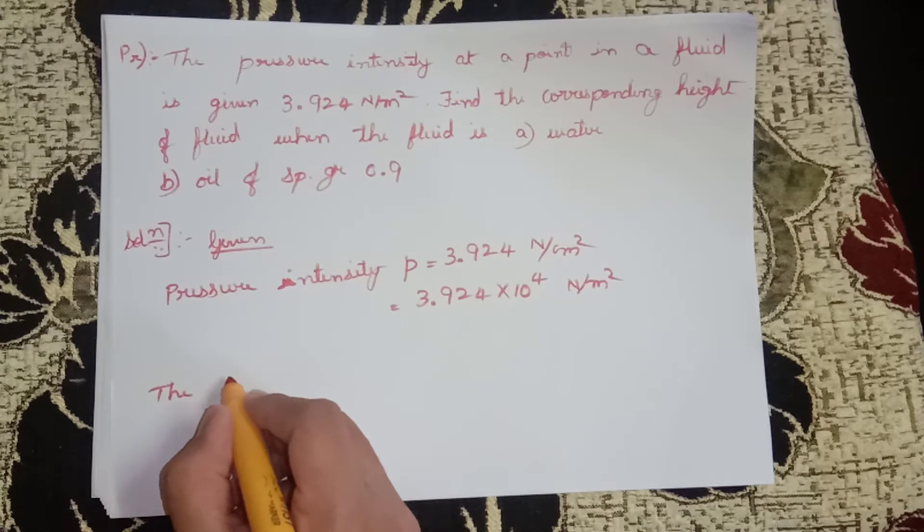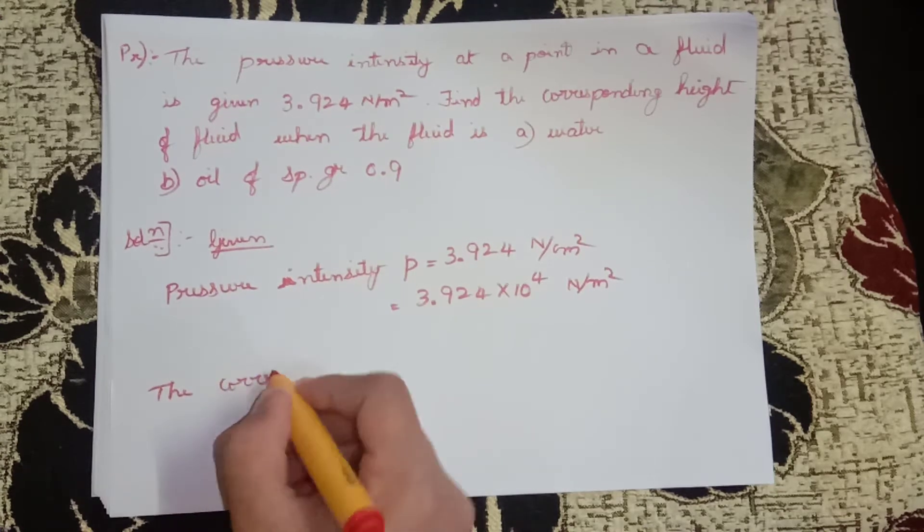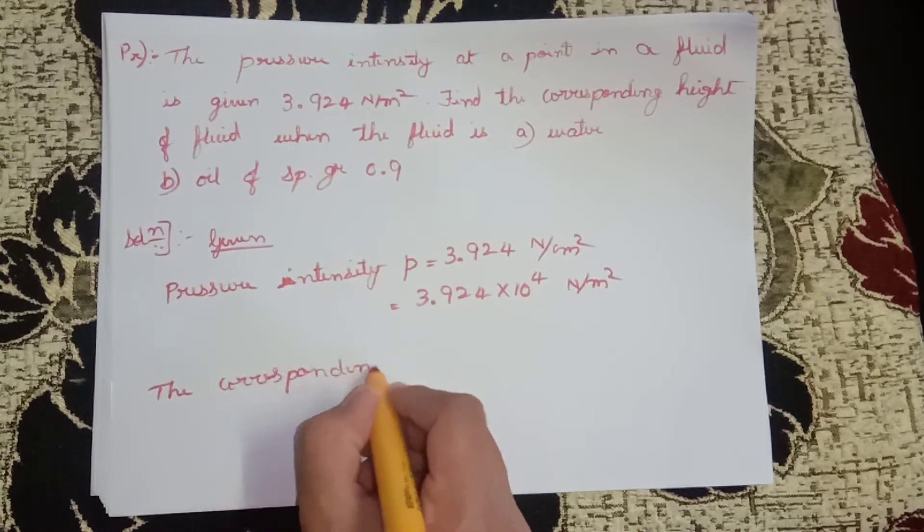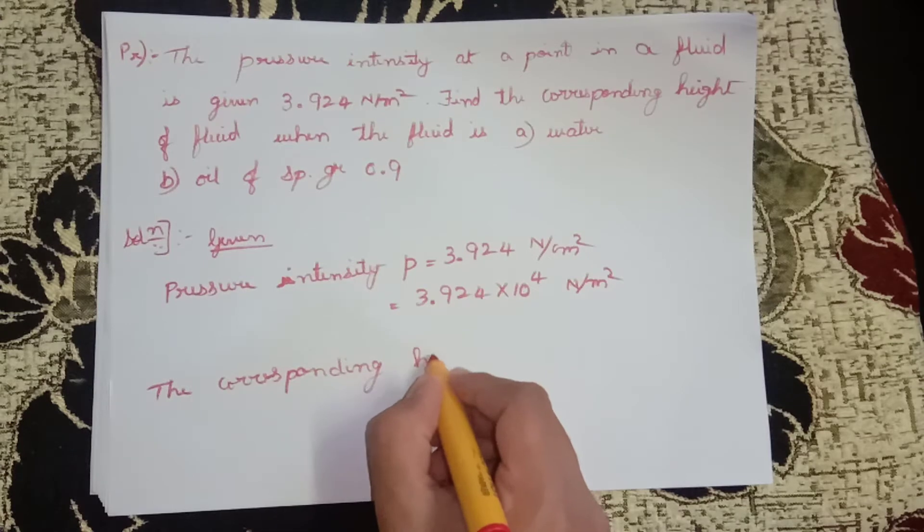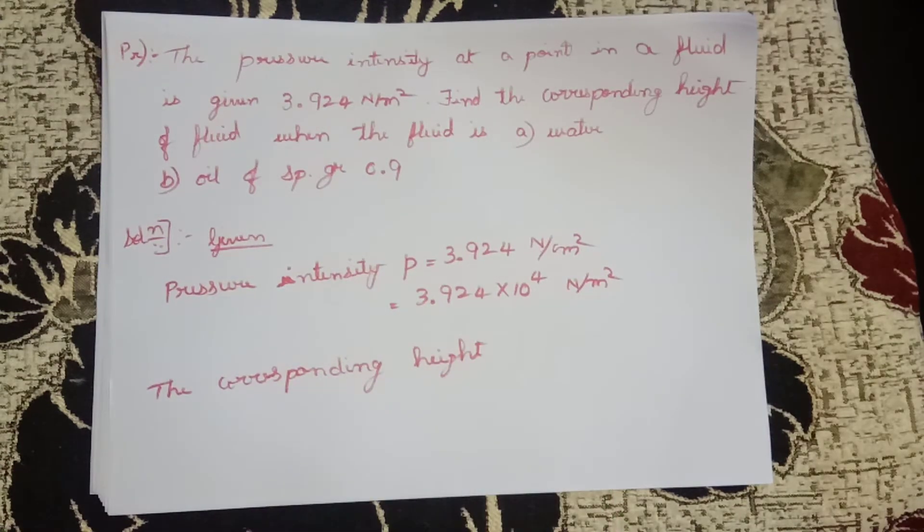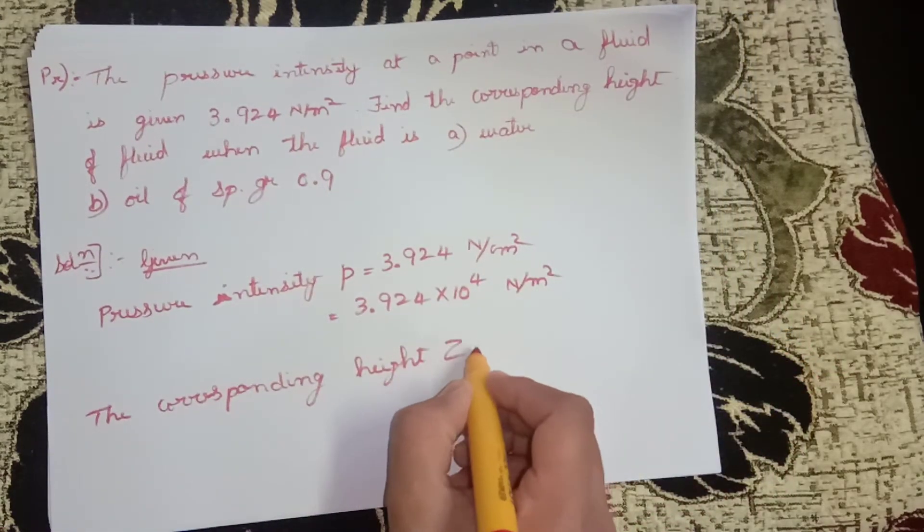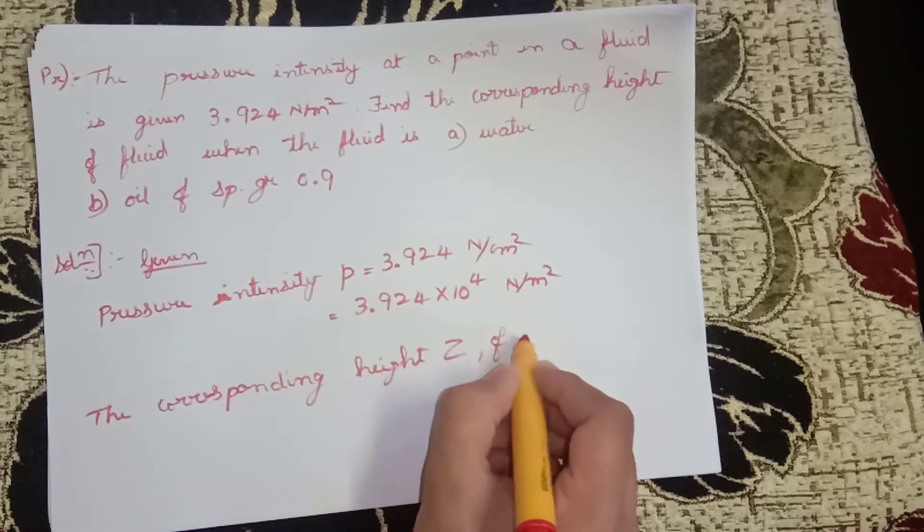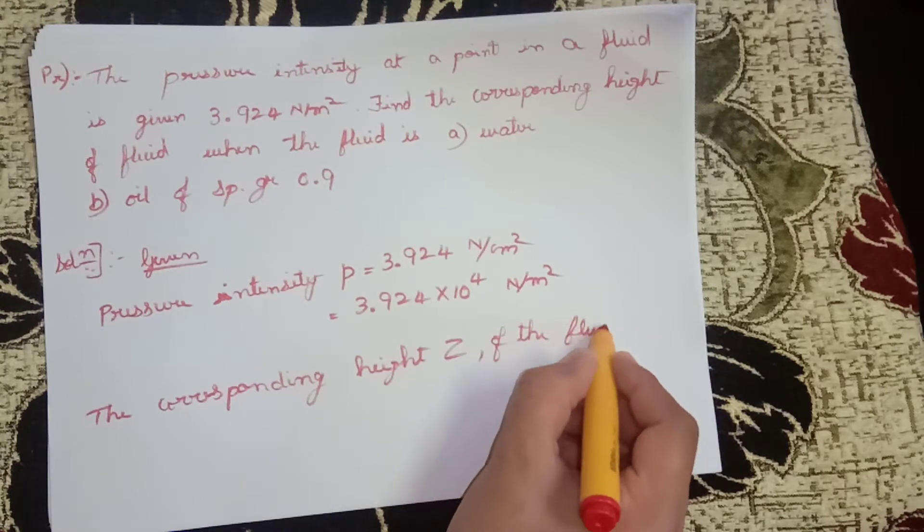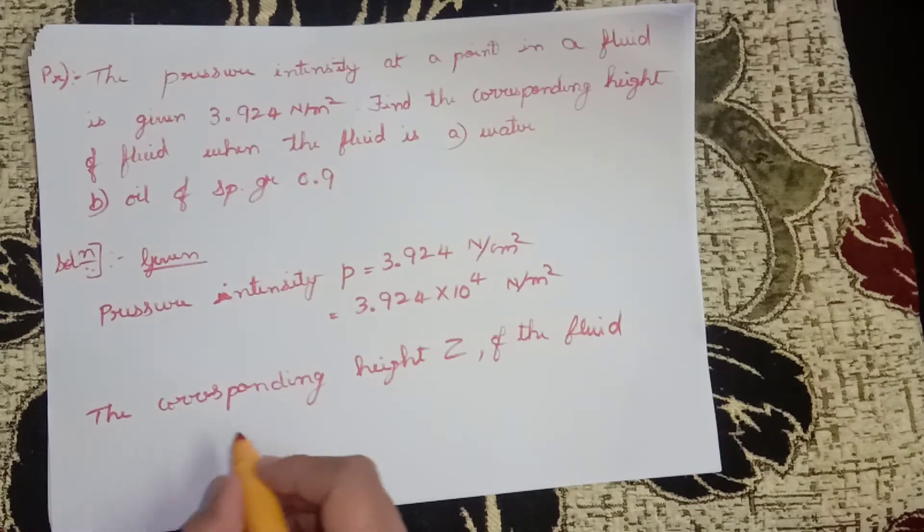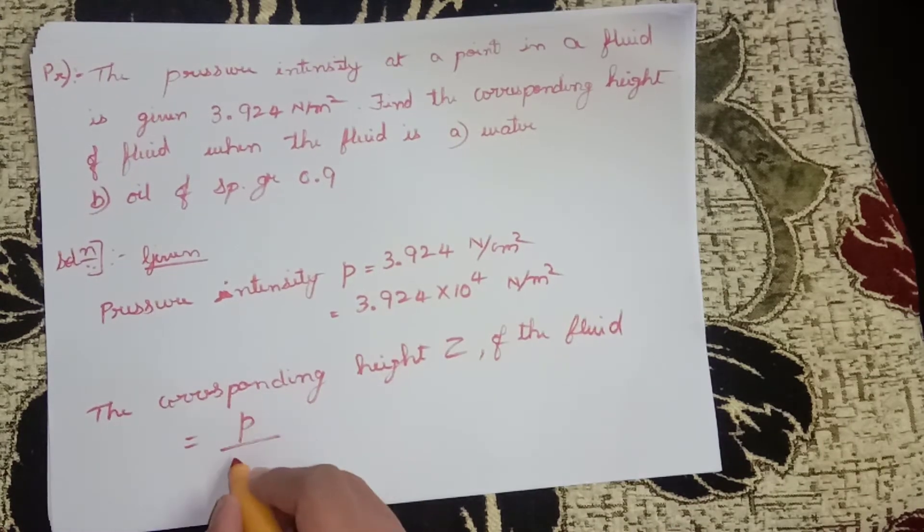Then the corresponding height z of the fluid equals P divided by rho times g.